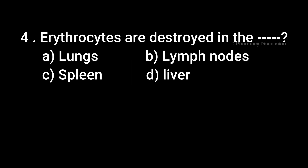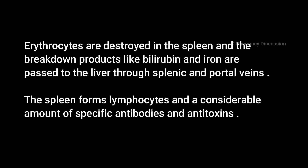Question 4: Erythrocytes are destroyed in — Option A: Lungs, B: Lymph nodes, C: Spleen, D: Liver. Correct answer is Option C: Spleen. Erythrocytes are destroyed in the spleen, and the breakdown products like bilirubin and iron are passed to the liver through the splenic and portal vein.